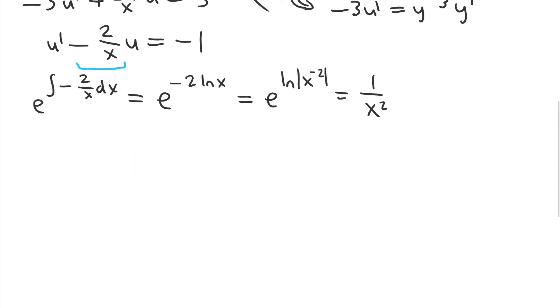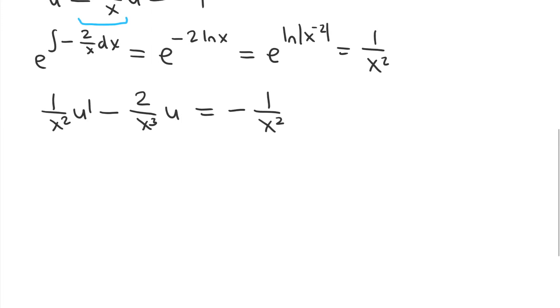And so then I'm going to multiply both sides of the equation by the integrating factor. On the other side, I get negative 1 over x squared. And the left-hand side becomes integrating factor times our unknown function, the derivative of that.